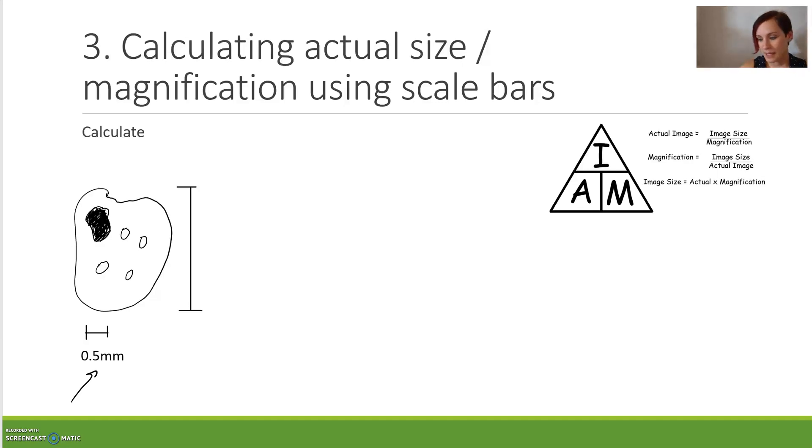I've got a scale bar here, and this scale bar is telling me that this tiny little thing, which I'm going to measure with an actual ruler, is 10 millimeters representing 0.5 millimeters in real life. So this one here is our image length of our scale bar, and this one here will be our actual. The very first thing we have to do is work with our scale bar and calculate magnification. Now we use this triangle by saying, if we're trying to find M, then we have to look at the I and the A as a fraction. So M is equal to I divided by A.